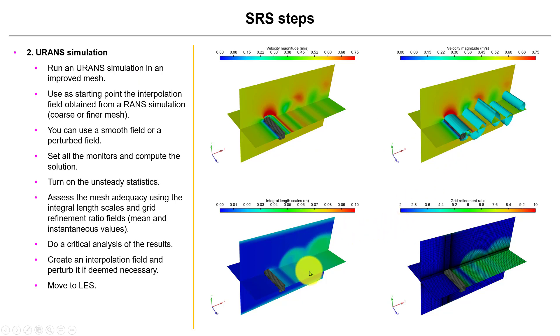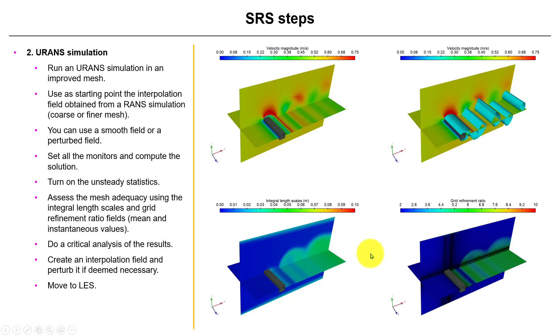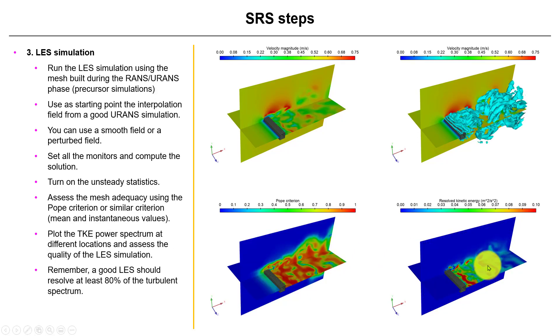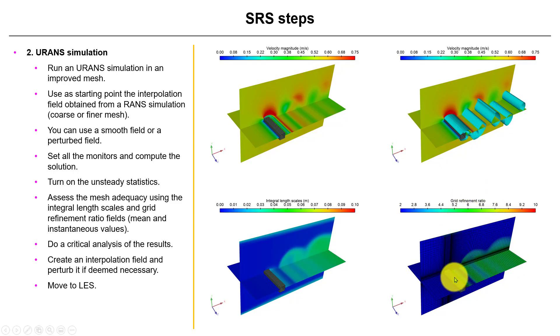So see here that we're running the simulation. We have the von Karman street and see that the integral length scale, the information that we get is very different from the previous one. Now that you have unsteadiness, the tendency will be to get lower values. So previously see that we have a mesh that basically was telling that this was good. It was like 10 in the grid refinement ratio. See that now it's something about five. It's marginal. It would be better to reduce, but it says that this mesh is there, it's borderline.